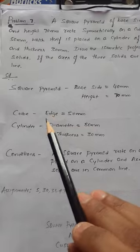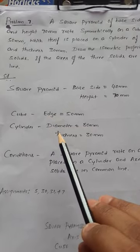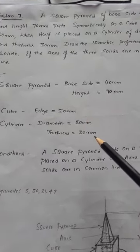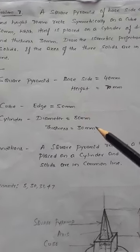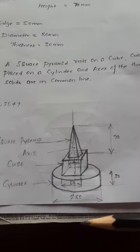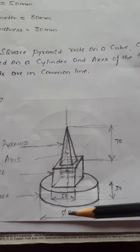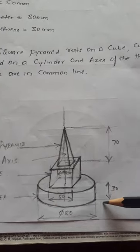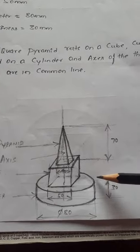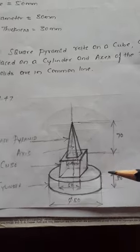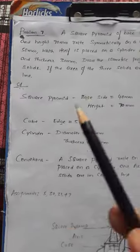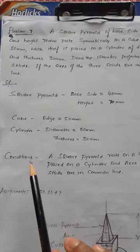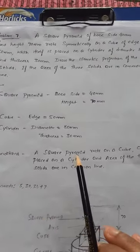The third solid is a cylinder with diameter 80 mm and thickness 30 mm. The condition is that the axis of the three solids are in a common line — this is a combination of three solids problem.